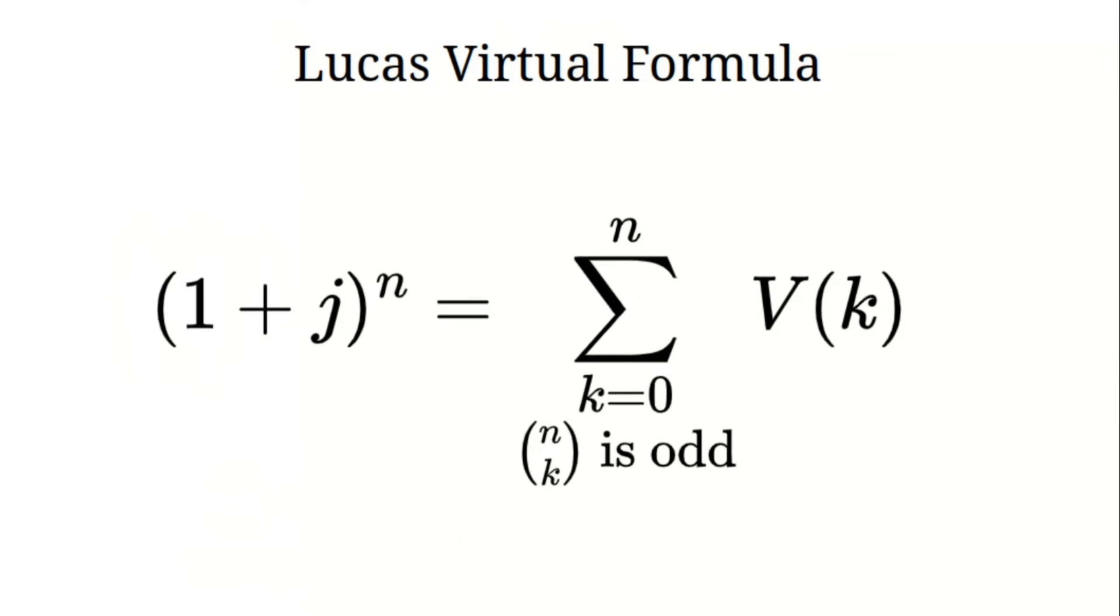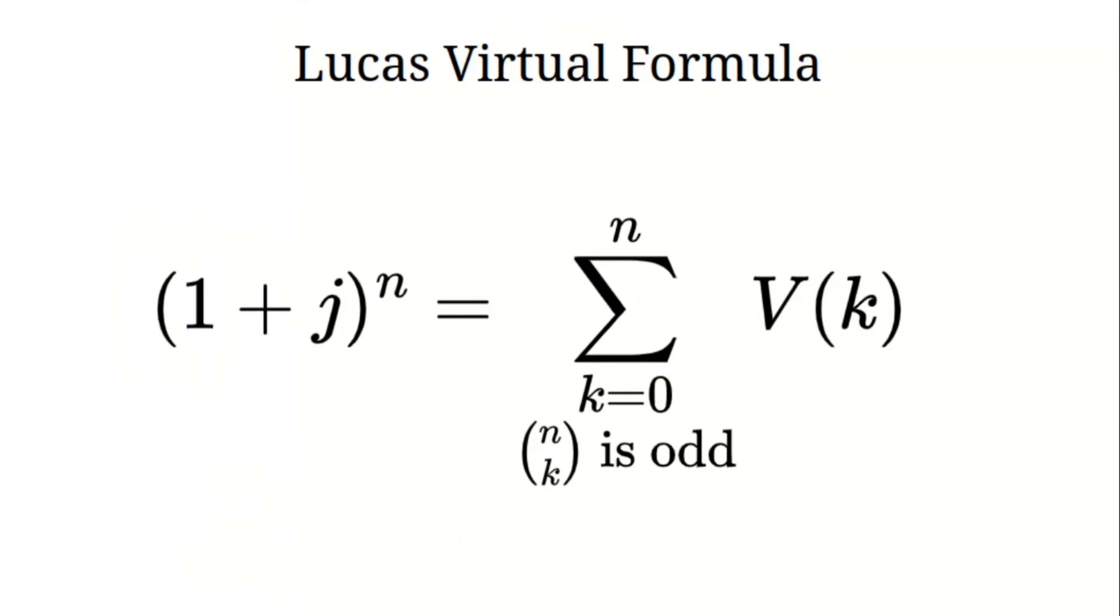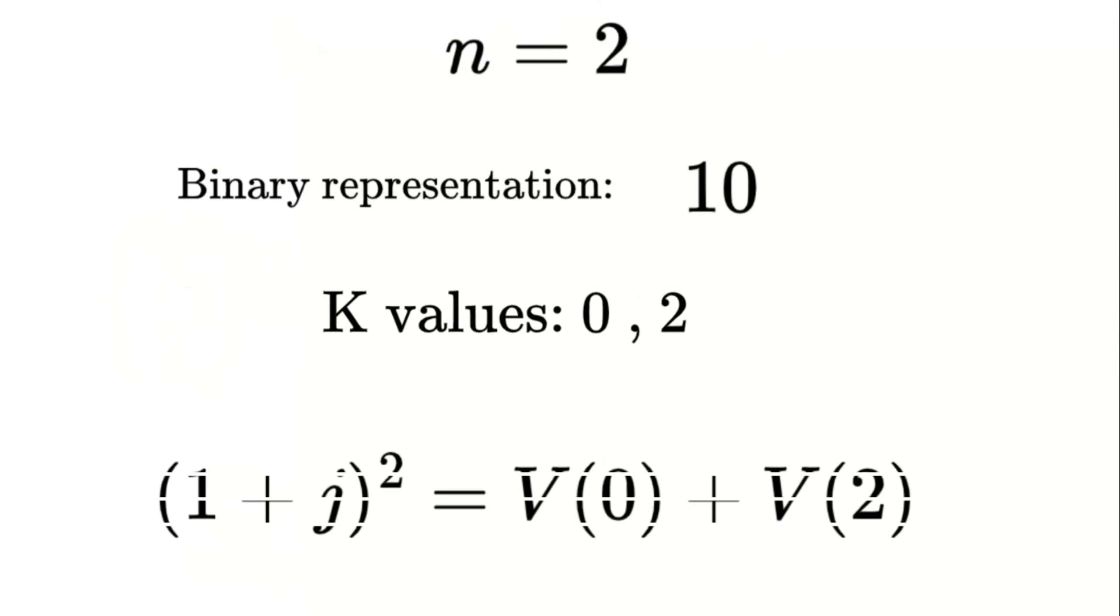Now let's apply this to specific values of n and see how it works. Example 1 when n equals 2 the binary representation of 2 is 1 0. The valid k values are 0 and 2 since those satisfy our binary condition. So we get 1 plus j squared equals V of 0 plus V of 2.